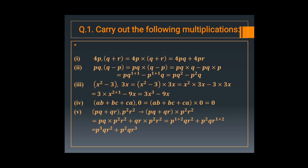Now in the fourth question, AB plus BC plus CA multiplied by 0. As you all know, if you multiply any number by 0 — whether it is a variable or a constant — the product is also 0.